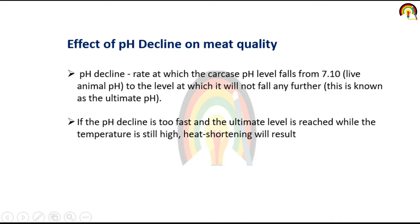Effect of pH decline on meat quality: the rate at which the carcass pH level falls from 7.10 to the level at which it will not fall any further. If the pH decline is too fast, the ultimate level is raised while the temperature is still high and heat shortening will result.